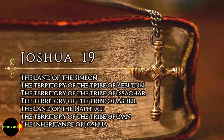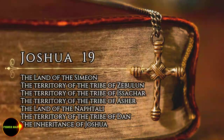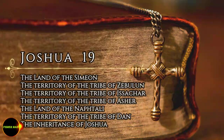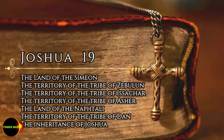But the Danites had difficulty taking possession of their territory, so they went up and attacked Leshem, took it, put it to the sword, and occupied it. They settled in Leshem, and named it Dan, after their forefather. These towns and their villages were the inheritance of the tribe of Dan, clan by clan.